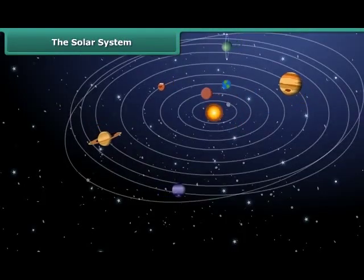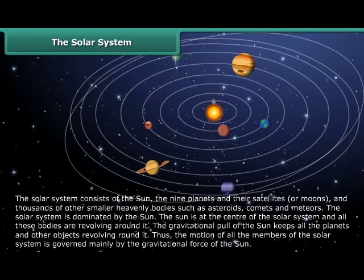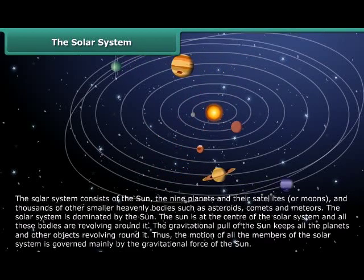The Solar System consists of the Sun, the nine planets, and their satellites or moons, and thousands of other smaller heavenly bodies such as asteroids, comets, and meteors. The Solar System is dominated by the Sun. The Sun is at the center of the Solar System and all these bodies are revolving around it.